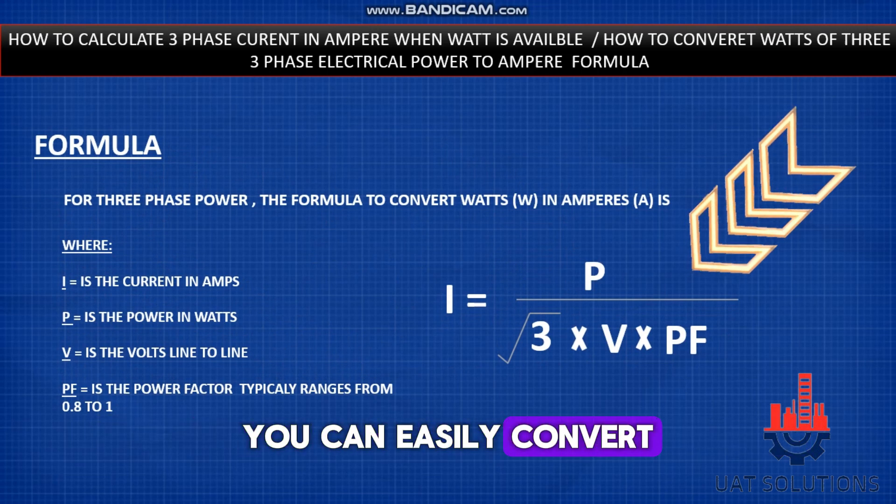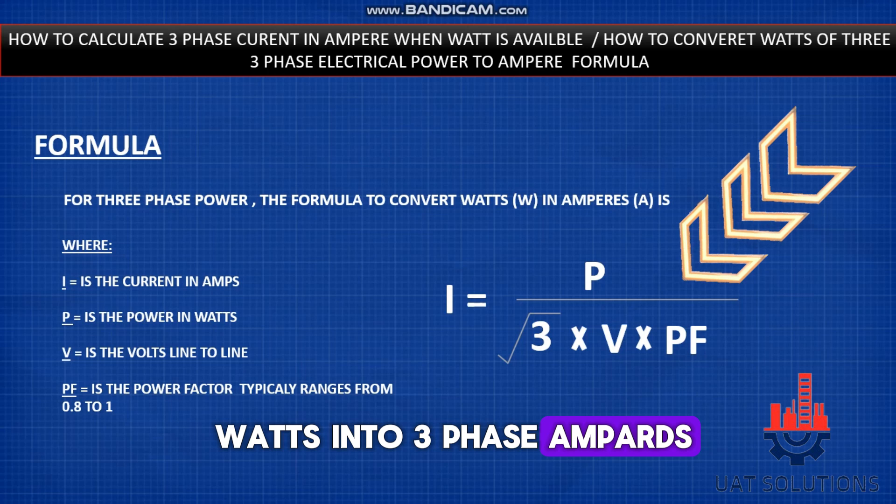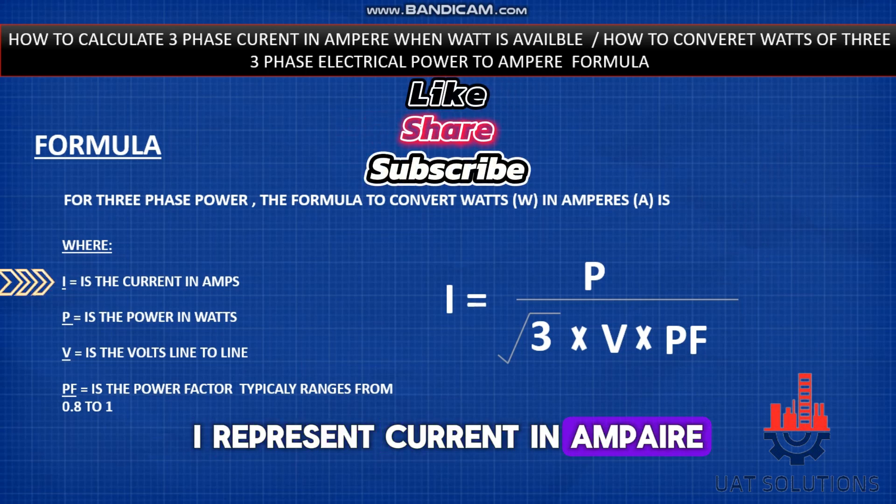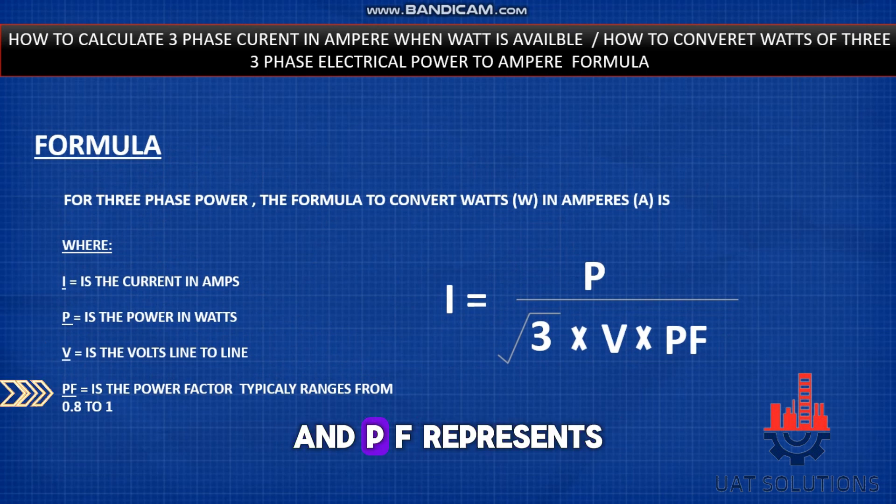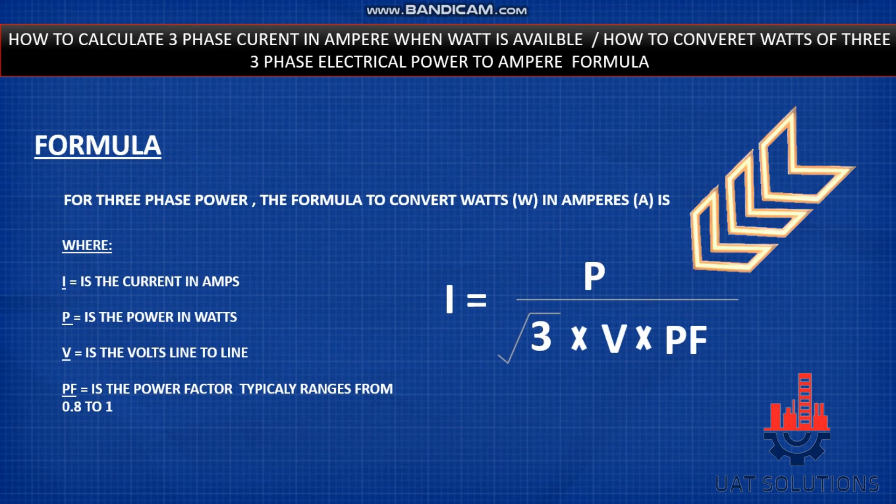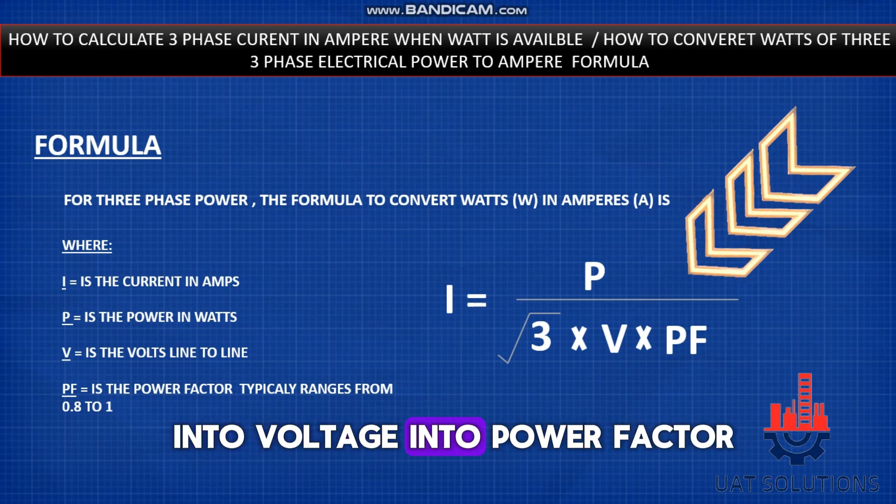Using this formula, you can easily convert watts into three-phase amperes. I represents current in amperes, P represents power in watts, V represents line-to-line voltage, and PF represents power factor. The formula is: I = P / (√3 × V × PF).